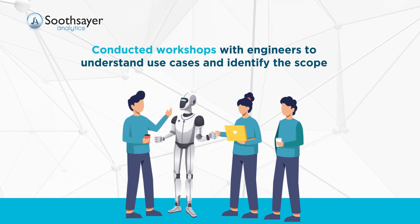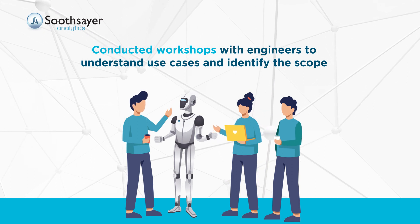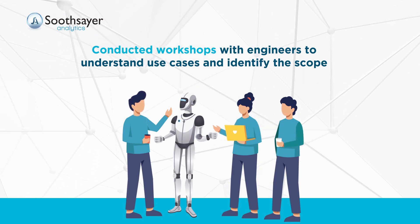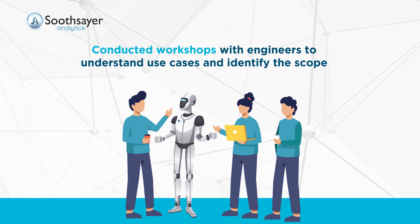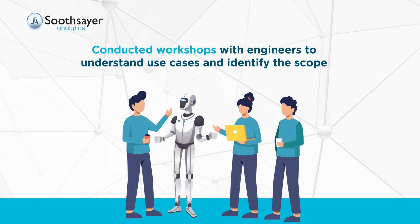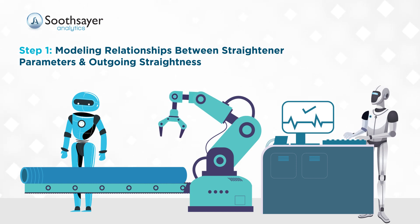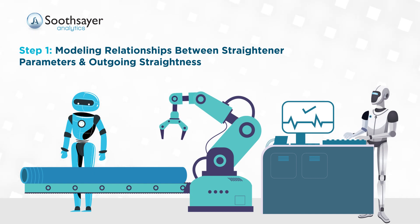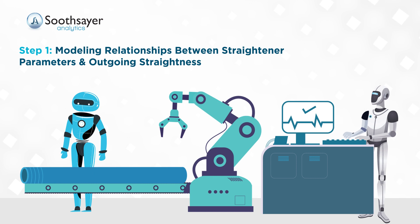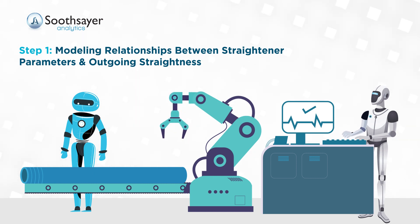Soothsayer understood the complete manufacturing process by conducting workshops with engineers on site to clearly identify the use cases and define the scope. Machine learning models were built to predict the outgoing straightness measurement using historical data. One model was developed at a batch level to accommodate the absence of pipe traceability across the manufacturing process. Another model was developed envisioning the scenario if the client were to have pipe traceability.